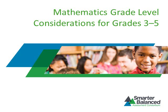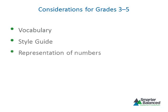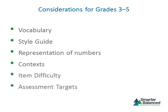Welcome to the Smarter Balanced Assessment Consortium's Elementary School Mathematics Grade Level Considerations Training Module. This module examines considerations for item and task development specific to grades 3 through 5. Topics include use of appropriate grade level and mathematics vocabulary, an overview of the Smarter Balanced Style Guide, appropriate representation of numbers, grade-appropriate contexts, item difficulty, and the assessment targets that are grade level specific.